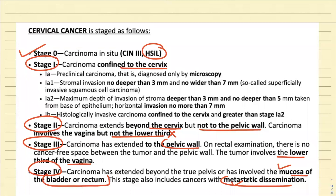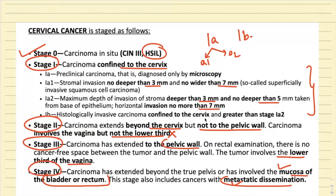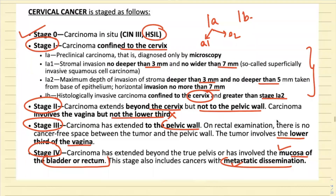Stage one can be divided into 1A and 1B. Stage 1A is further subdivided: 1A1 is when stromal invasion is no deeper than 3 mm and no wider than 7 mm; 1A2 is when stromal invasion is deeper than 3 mm but not more than 5 mm and horizontal invasion no more than 7 mm. Stage 1B is carcinoma confined to the cervix but greater than 1A2.